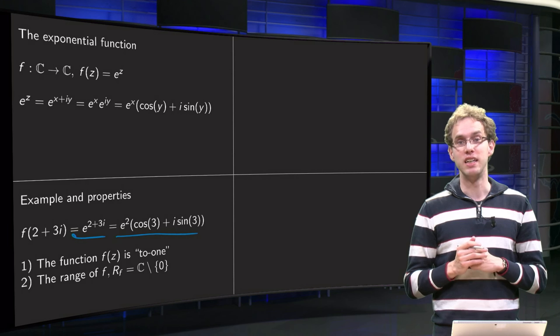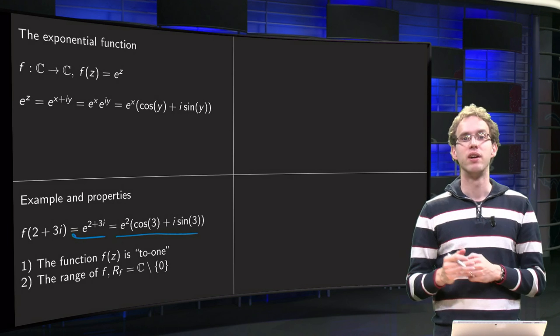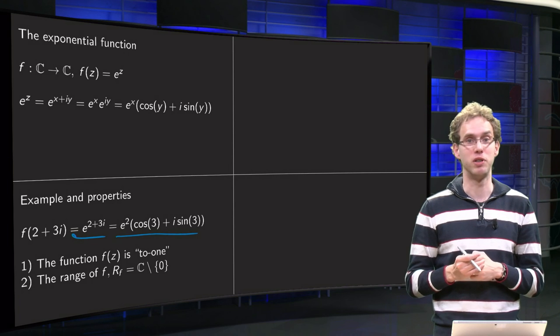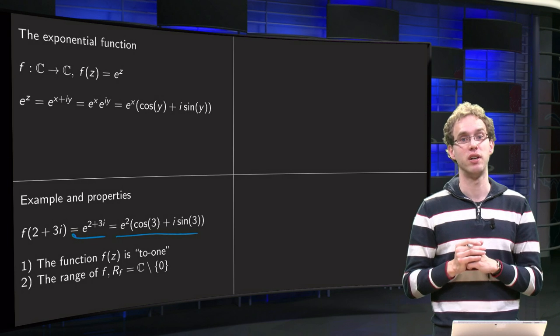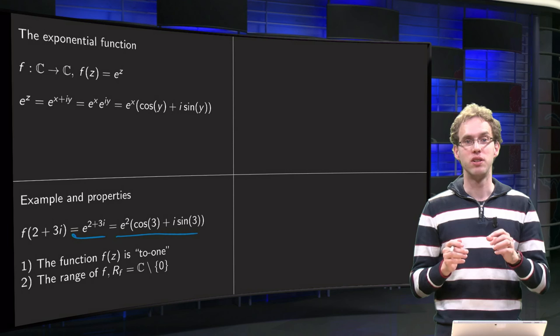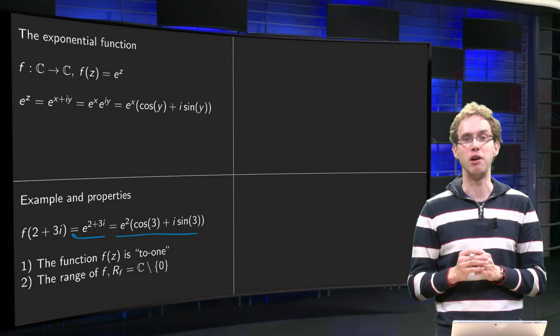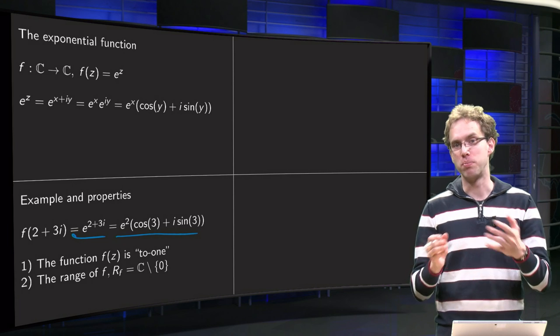We immediately observe that whatever number you plug into your exponential, you will get one answer out. So that means the function f of z is to one; you had one outcome. It may not surprise you, it may seem trivial.